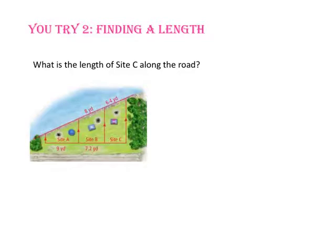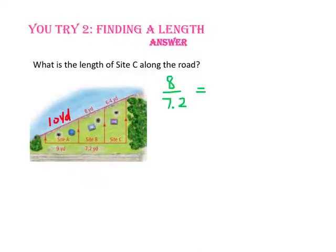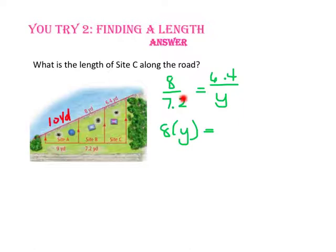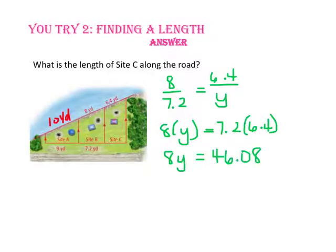Pause the video and do you-try number 2. To find the length of site C along the road, let's use our same ratio, 8 to 7.2, as the first half of our proportion. Our second ratio will be the length of site C along the river to the length of site C along the road — let's call that y. To solve our proportion, we'll use the cross product property by multiplying the extremes and then the means. 8y is equal to 46.08. Divide both sides by 8 and y equals 5.76.